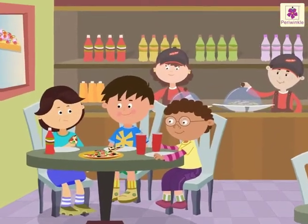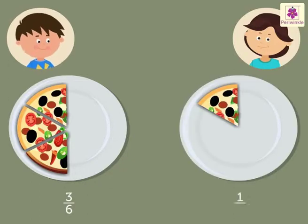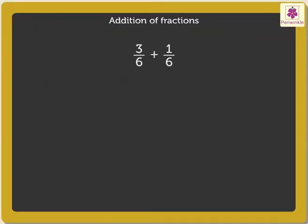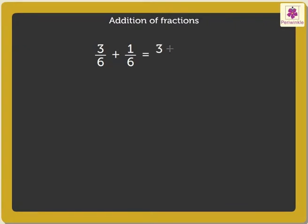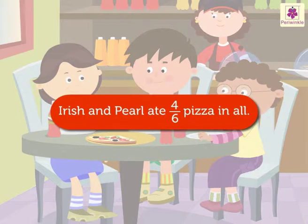Look at them eating. Irish ate three-sixths of the pizza. Pearl ate one-sixth of the pizza. How much pizza did the two of them eat in all? Here, we have to add both the fractions 3 upon 6 and 1 upon 6. Since they are like fractions, we add just the numerators: 3 plus 1 upon 6, which is equal to 4 upon 6. Thus, Irish and Pearl ate four-sixths pizza in all.